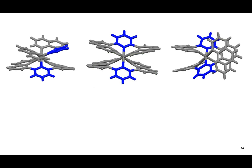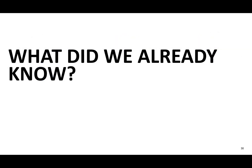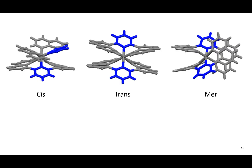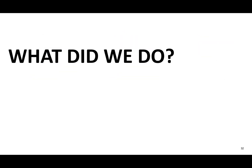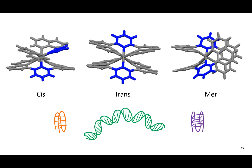In the complexes that we used, the ligands — the organic molecules — can arrange round the ruthenium in different ways. We call this one cis, this one trans, and this one mer. These names are based on their shape. These compounds had already been made by others, but no one had looked at their interaction with DNA. So what we did was look at how these three different complexes interacted with different DNA structures.